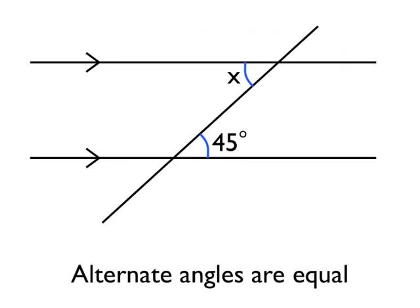This could be a typical alternate angles problem. So we have angles inside parallel lines, and we're told that one of them is 45 degrees. And we've got an unknown angle of size X.